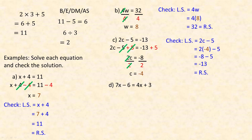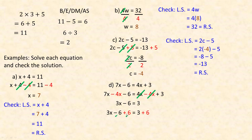Example D has x's on both sides. Use inverse operations to rearrange so x's are on one side and numbers on the other. First, subtract 4x from both sides to move the x's to the left: 7x minus 4x is 3x, and the 4x on the right becomes 0. Now we have 3x minus 6 equals 3. Then add 6 to both sides — the opposite of subtracting 6 — leaving 3x equals 9. Finally divide both sides by 3 to get x equals 3.